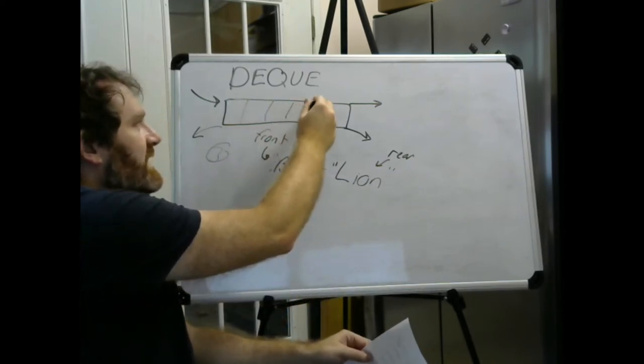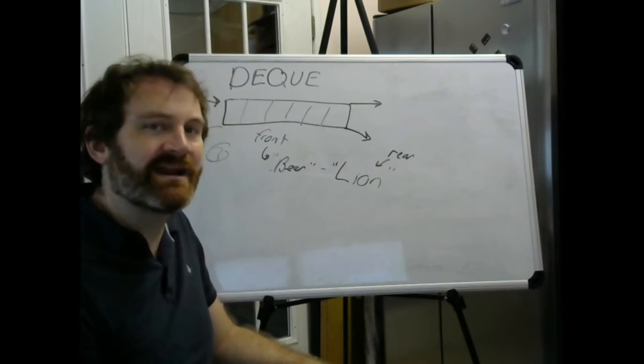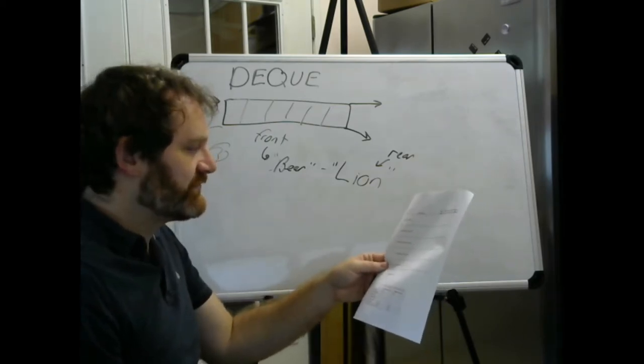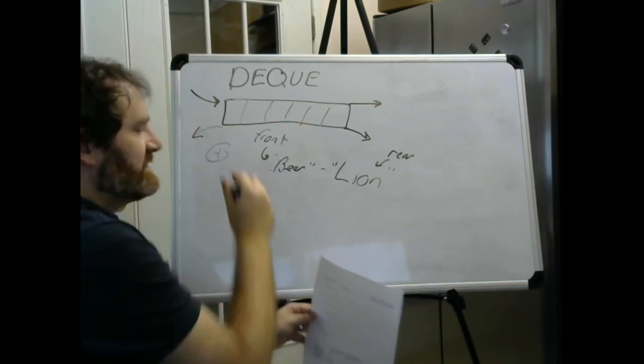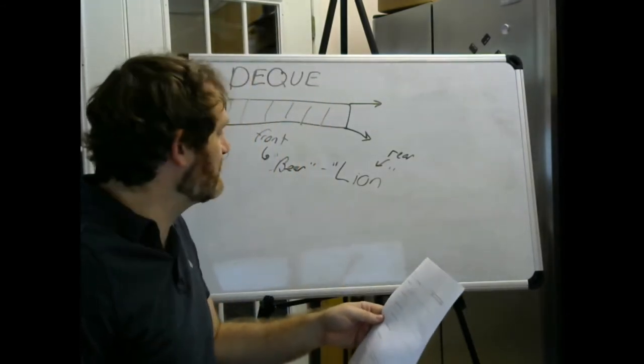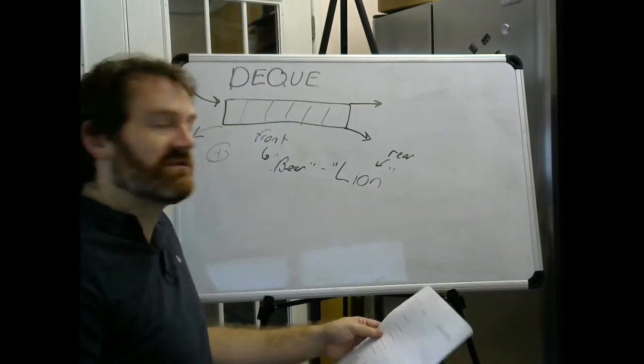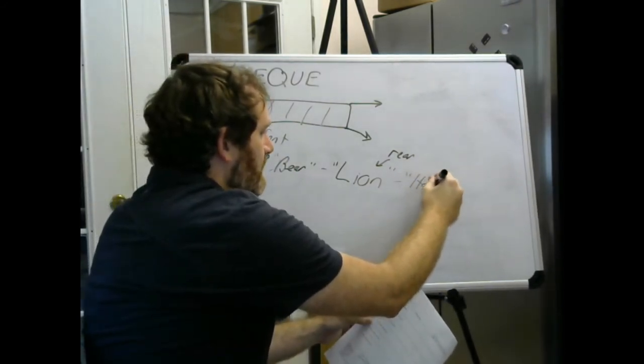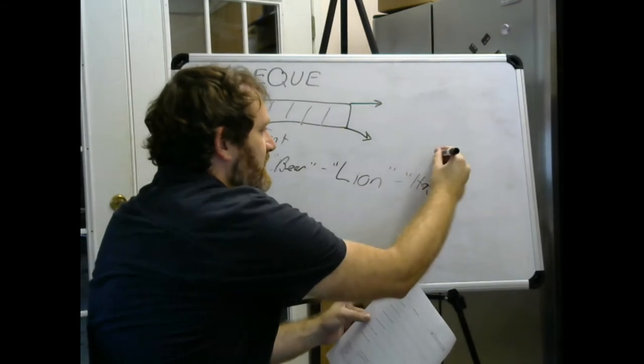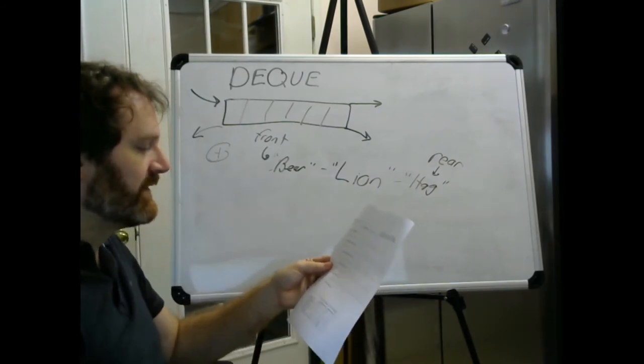Again, think of it like a line at a grocery store or a line to get on the airplane. Some people can go first, and they get added to the front. They are specials. Step four, adding to the rear. So we're in line at the airport, and the bear gets on the plane first. The lion gets on the plane next. And now comes the hog. Step four, add to the rear the hog. The hog goes at the end. And now, conceptually, the rear of this list is here. We've just done step four.